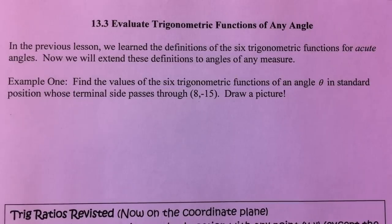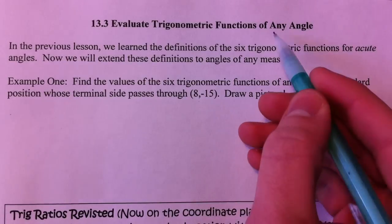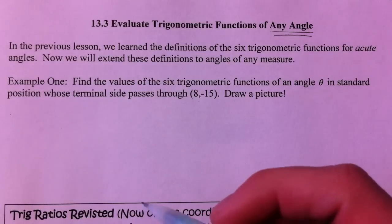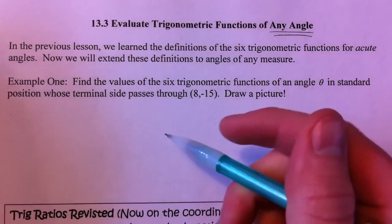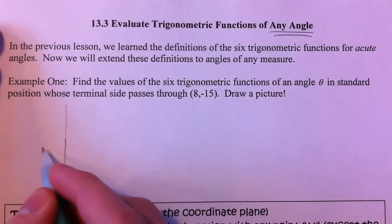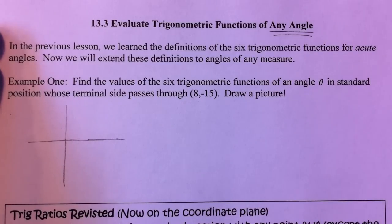We've done a little review of geometry, and sine and cosine and tangent, and we've introduced secant and cosecant, but only with angles in a triangle. Now we're going to talk about any angle — meaning we can do negative angles, positive angles, all the way around to 360 and beyond 360. In order to do that, we have to think about triangles being placed on the coordinate plane.